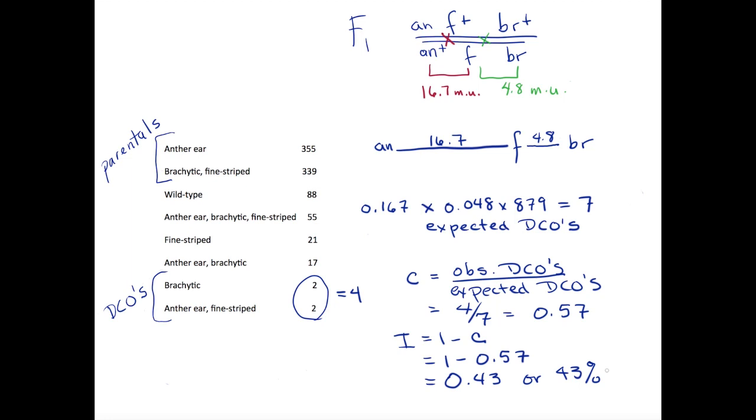Now we have completed our three-factor cross question. We have determined the linkage arrangement, the order of the genes on the chromosome, and the map distances between the genes. We've also calculated the interference for this region. Although map distances are generally based on two-factor data, three-factor crosses help us to think about some important concepts, including double crossovers and interference. So it's worth working through problems like this involving three genes on a chromosome.